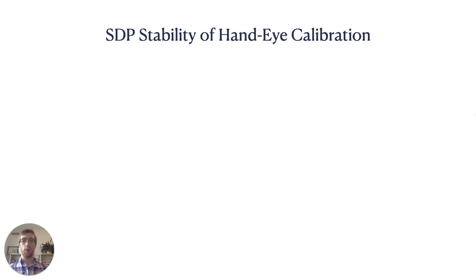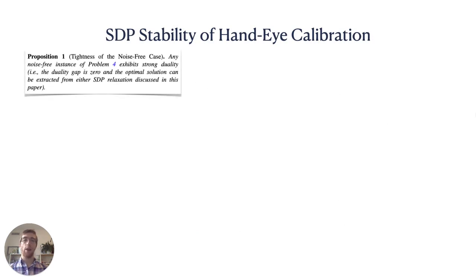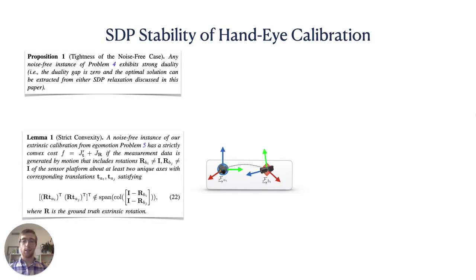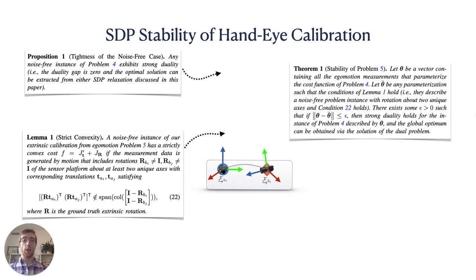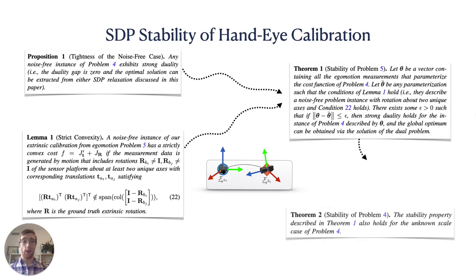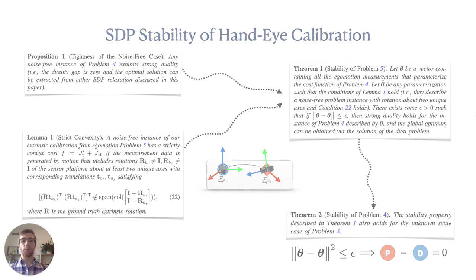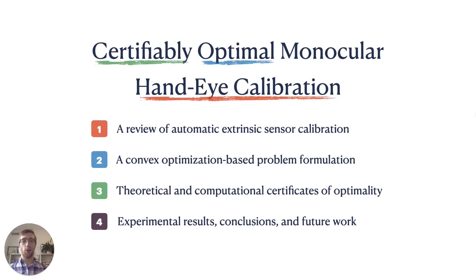The details are too lengthy to provide in this video, but we will summarize our proof of the noise-stability property described in the previous slides. First, we prove the trivial result that the noise-free problem instances exhibit strong duality. Next, the core of our results follows from a lemma describing the conditions under which the cost function of the known scale version of our QCQP is strictly convex, which includes the well-known observability criterion of rotations about two or more unique axes. We combine these results to prove that the known scale version of the problem is stable in the presence of noise. Finally, this result is extended to the unknown scale or monocular camera case.